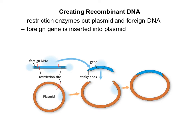The way to create recombinant DNA is to use restriction enzymes to cut both the plasmid that you're going to insert the DNA into and the foreign DNA. If you use the same restriction enzyme, it's going to cut at the same restriction site, which will leave the same sticky ends, and that gene you're inserting will just insert nicely into the plasmid.